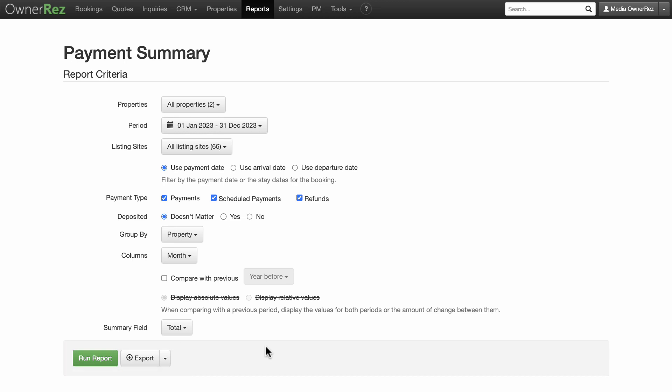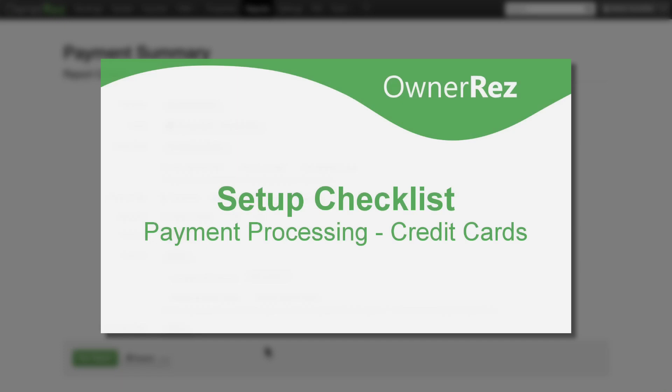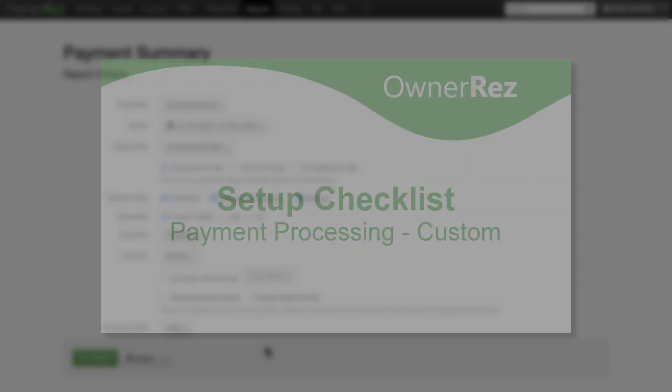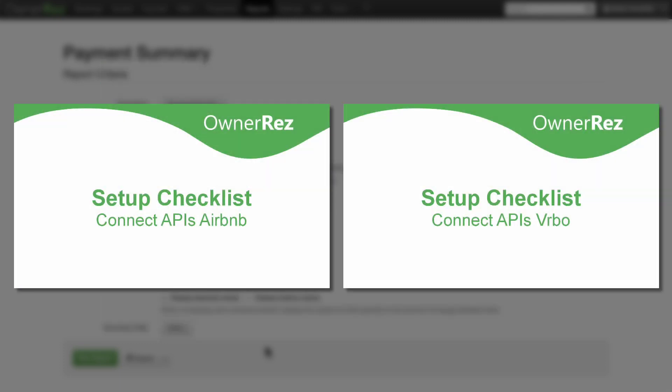Please see our other videos for more detailed information about each of our different payment processing options — credit cards, PayPal, and custom options. After you've set up your payment options and are ready to continue on to the next step in the Setup Checklist, be sure to watch our Setup Checklist Connect APIs video. Thanks for choosing OwnerRes.